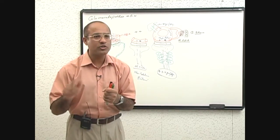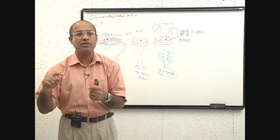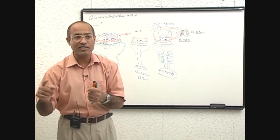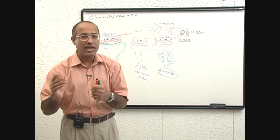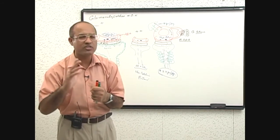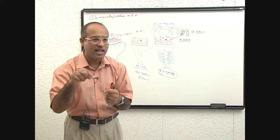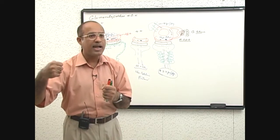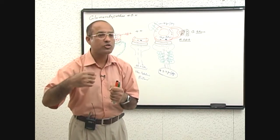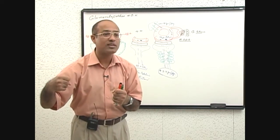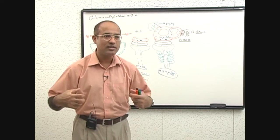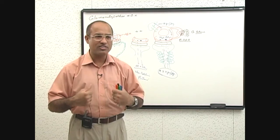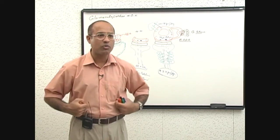Secondly, angiotensin 2 will act on zona glomerulosa of adrenal cortex. And adrenal cortex will release aldosterone. And aldosterone will go to the principal cells of the nephron and reabsorb extra amount of sodium and water. So sodium and water is held in the body. So kidney strongly, staunchly hold salt and water in the body.